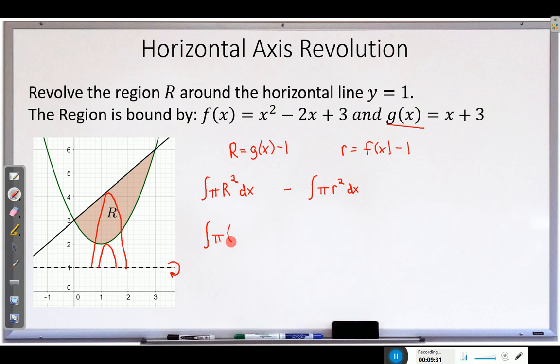So we throw these into our integrals. Pi times the big radius, which is g of x minus one squared, minus the integral of pi times the little radius, which is f of x minus one squared dx. What are our limits here? So we're going this way, so we're starting here at zero and going all the way to, it looks like three. So from zero to three, from zero to three.